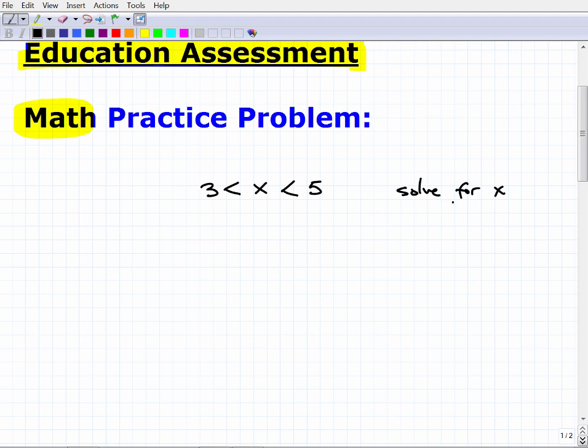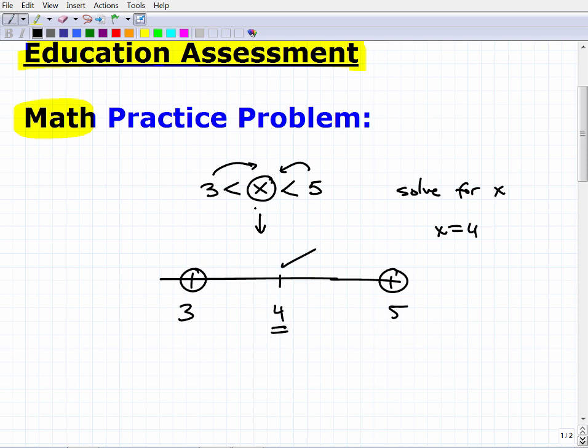Okay, so hopefully you had a chance to think about it. Now, if you answered the question and said x is equal to 4 because what we're talking about is some number that's greater than 3, right? So we have some number that's greater than 3, but at the same time it's less than 5. So if you think about on a number line, you have 3, 4, and 5.